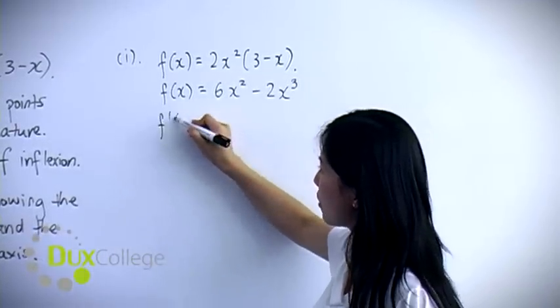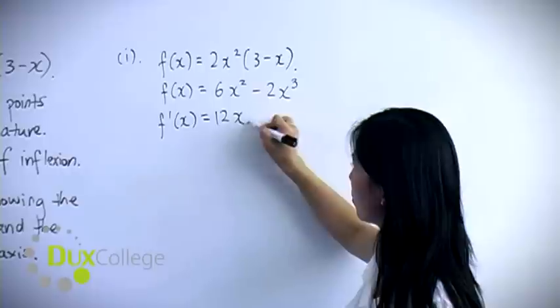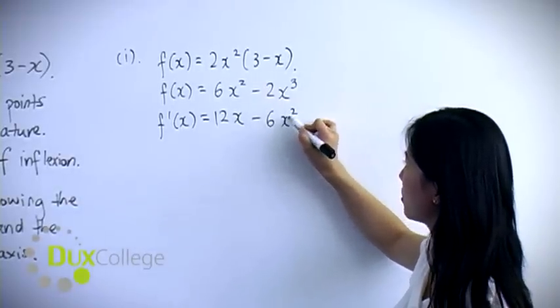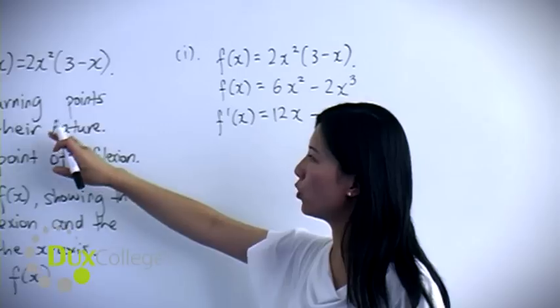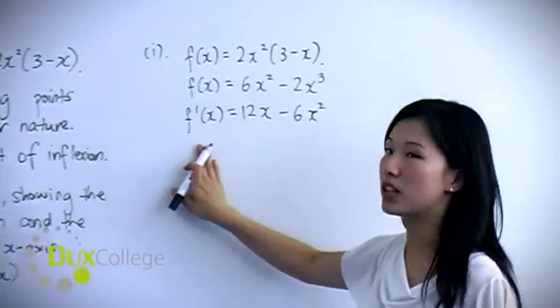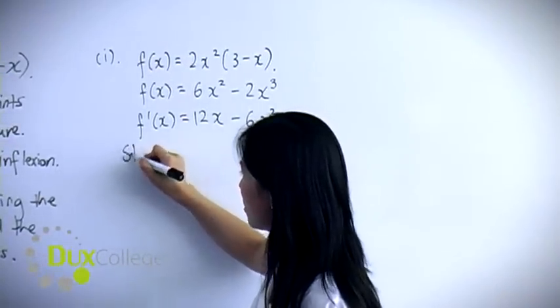So f'(x) = 12x - 6x². And turning point or stationary point occurs when the first derivative equals to 0.